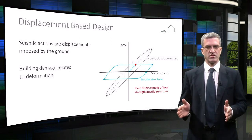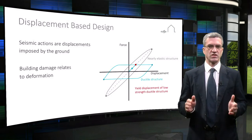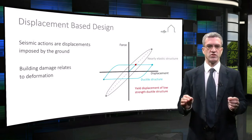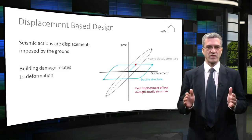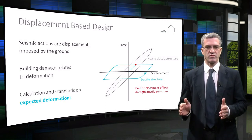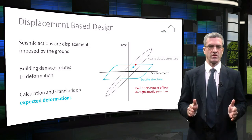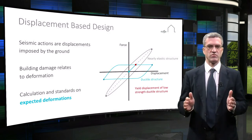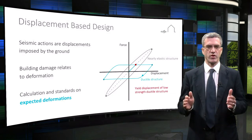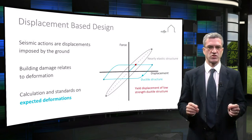Earthquakes are accidental loads — an analogy would be a car crash, in which significant permanent deformations may occur. Therefore, it makes intuitive sense to assess the structural behaviour of a building by calculating the expected deformations that may be imposed on a building from an earthquake and the tolerance of the structural and non-structural members to safely accommodate those imposed deformations, rather than using forces and strength in our calculations.